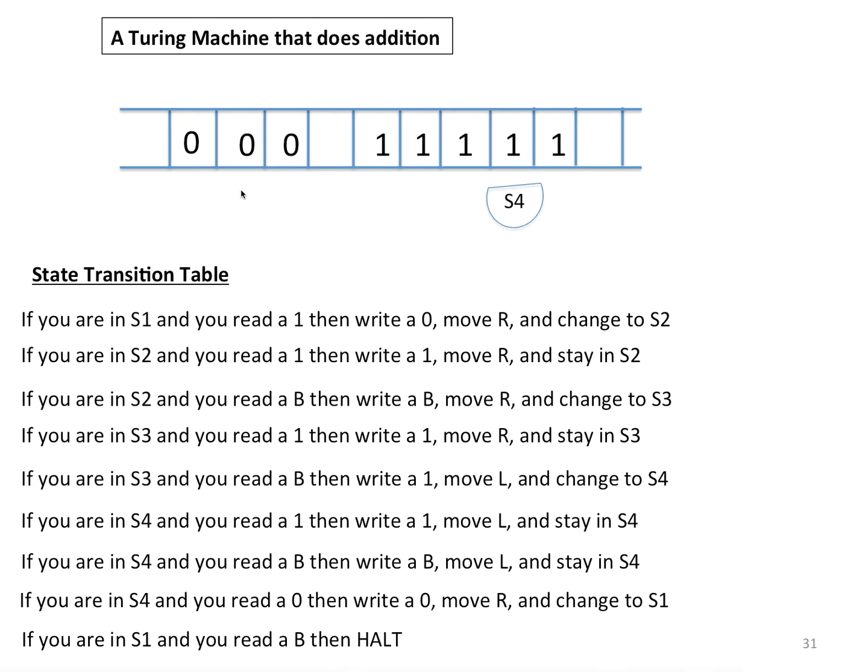Now, it's that pair of rules that I use to get all the way back to this 0. So now I'm in S4. I read that 0. So I write a 0, move right, and change to S1. But this time, there isn't a 1 above me. Instead, I'm reading a blank. That's my cue that I need to halt. And notice, at the point that I halt, the output is, as we said it should be, there are five 1s here.